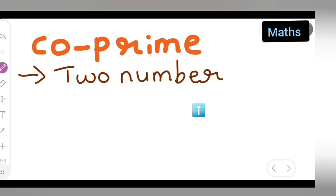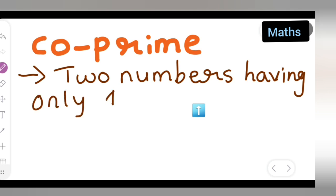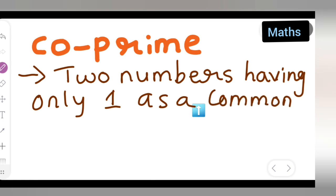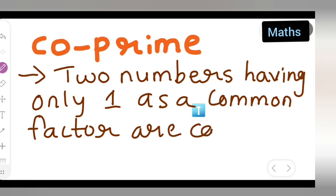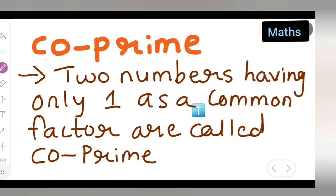Two numbers having only one common factor are called co-prime numbers.